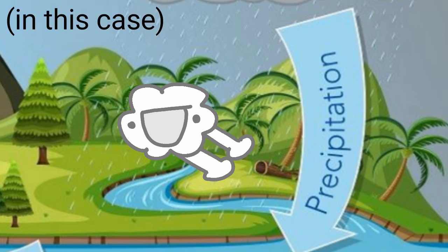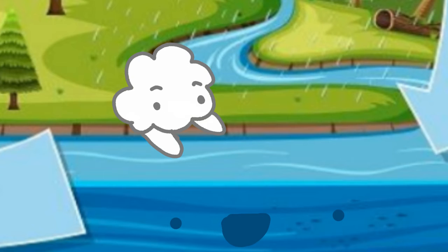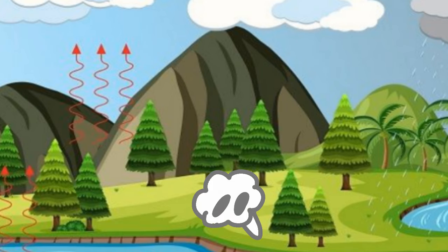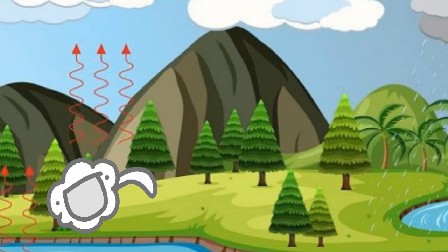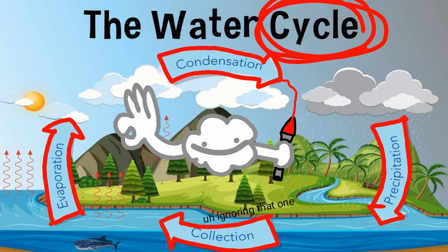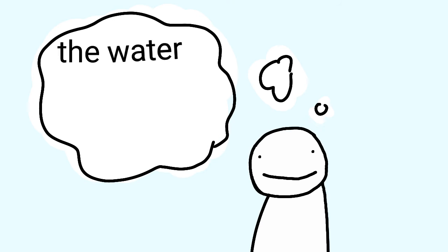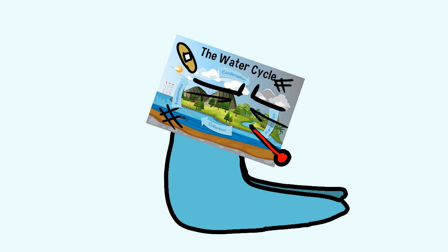The rain goes back into the water, maybe into groundwater, or into the roots, the trees, and the ground. Then the cycle repeats. You might be thinking that the water cycle is all fine and dandy, and for the most part it is, but there are a few problems with it.